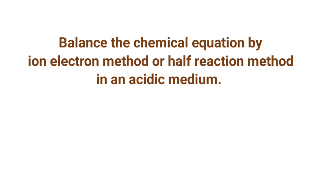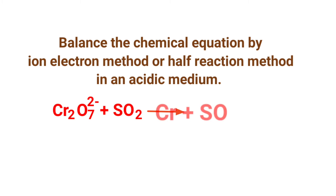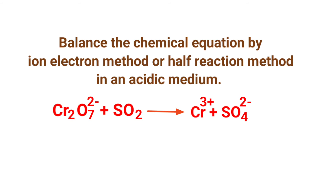Balance the chemical equation by ion-electron method, or half-reaction method, in an acidic medium. The equation is: dichromate ion plus sulfur dioxide gives chromium 3+ ion plus sulfate ion.